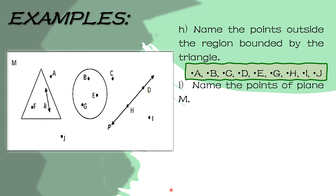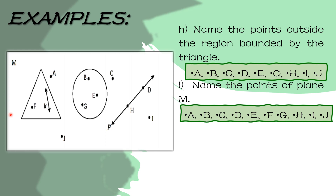Next, name the points of plane M. Pangalanan daw natin yung mga points na nasa plane M. Ang plane M natin — iyon yung buong rectangle. So ibig sabihin kabilang lahat ng points na nasa loob ng plane na ito, pero hindi dapat kabilang ang line K at line P dahil hindi sila points — sila ay halimbawa ng lines. So the answer are point A, point B, point C, D, E, F, G, H, I, and J.